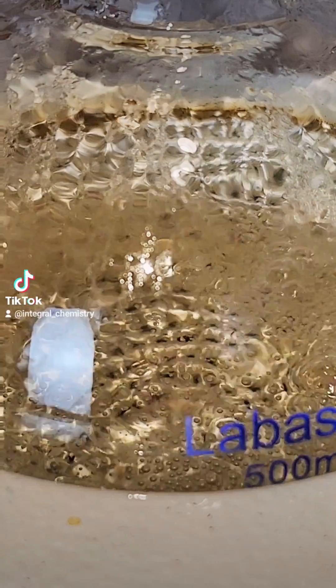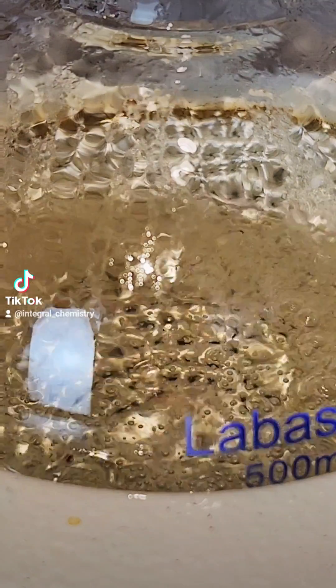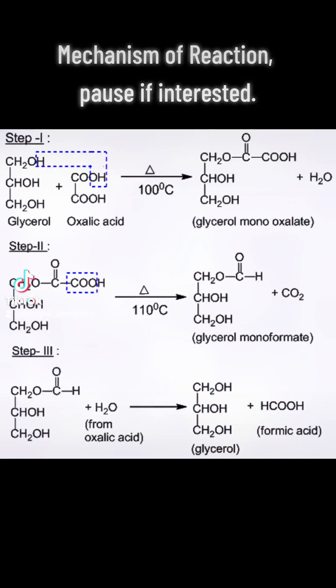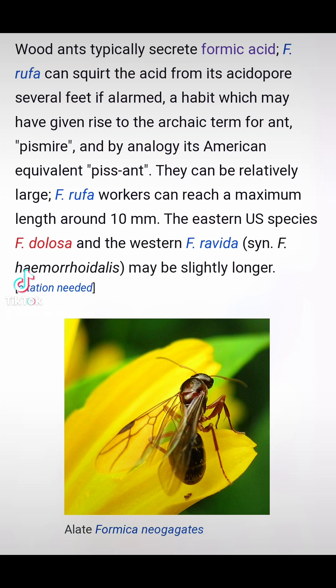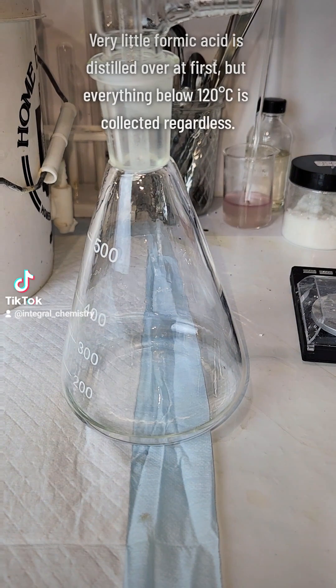I've included the reaction mechanism here, and you can pause it if you're interested. I also want to note that formic acid shares its name with a type of wood ant that sprays formic acid as a means of self-defense, which is pretty interesting.